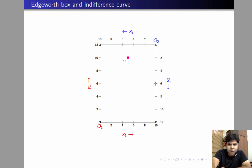Let's consider a point such as alpha. We'll plot the indifference curve of individual 1 through this point. This is how the indifference curve is going to look because individual 1's utility function is x1 plus y1. Now let's check how individual 2 ranks this alternative alpha compared to other points in the Edgeworth box.